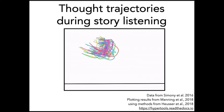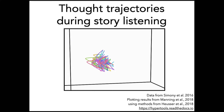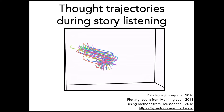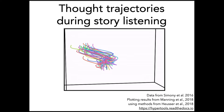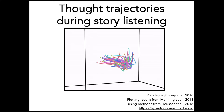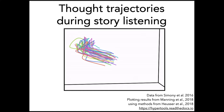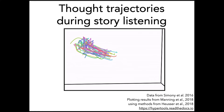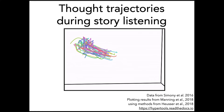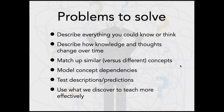Neil raises a point about whether you could track how differently people learned from a shared teaching experience like a lecture and continued conversation. Yes, we'll build up to that — we need a few of the other pieces first. Using text embedding models to construct thought spaces and thought trajectories helps us solve the first two problems on this list.